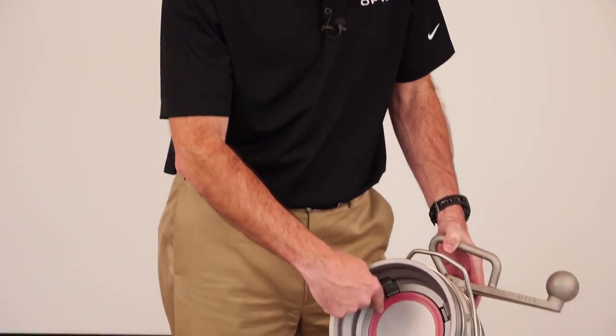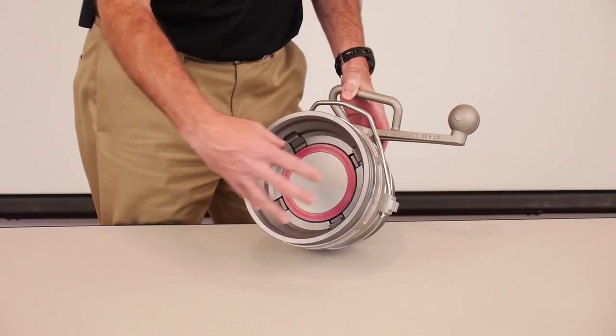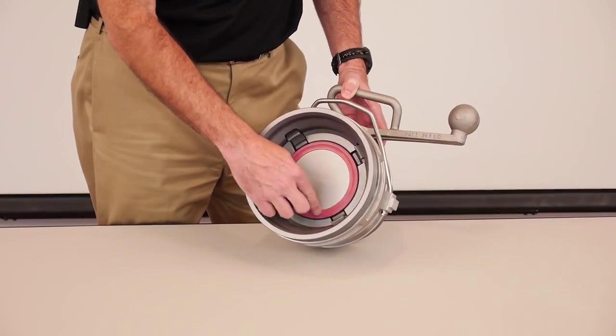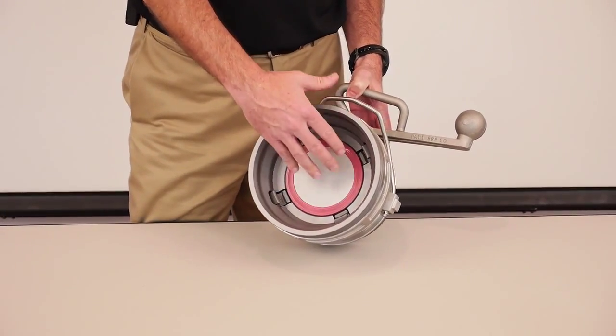The seal that's probably going to need to be replaced first is this face seal that you see right in the front of the coupler. This is the seal that rubs up against the adapter every time the coupler is put onto the truck. So it sees a lot of wear. This seal can easily be replaced while on the rack.